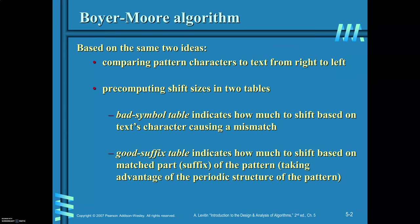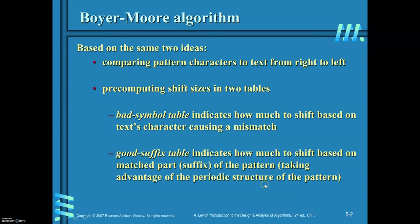So we will see the algorithm. This is based on two ideas: compare pattern characters to text from right to left, and pre-compute shift sizes in two tables. One is the bad symbol table and the other is the good suffix table. The bad symbol table — which you have already learnt in the Horspool algorithm — indicates how much to shift based on the text character causing a mismatch. The good suffix table indicates how much to shift based on the matched part of the pattern, taking advantage of the periodic structure of the pattern.